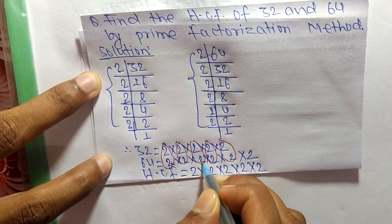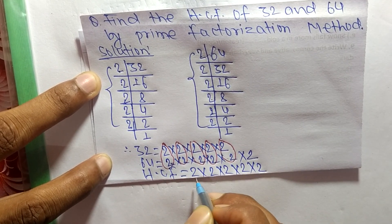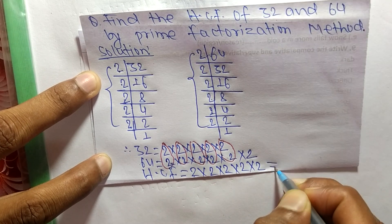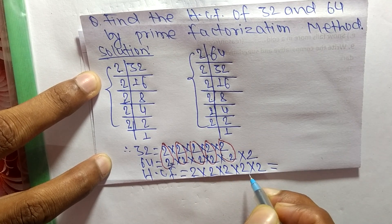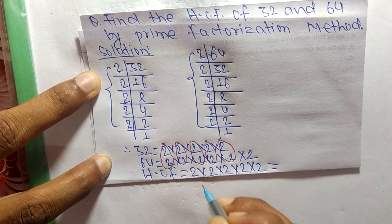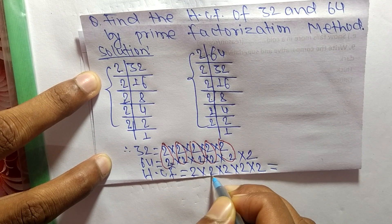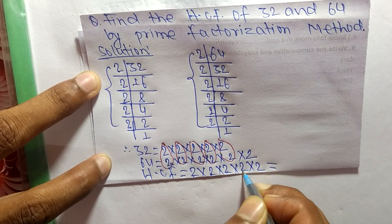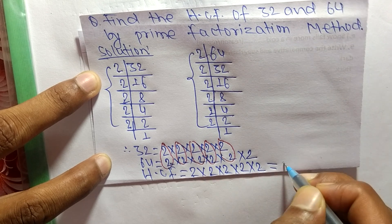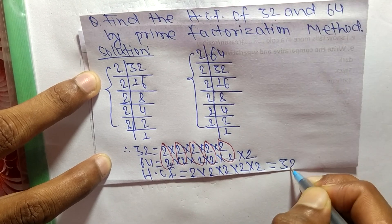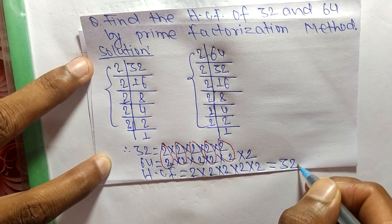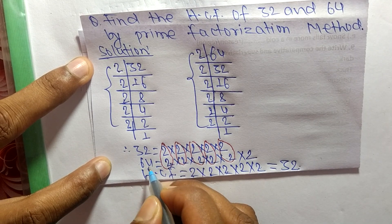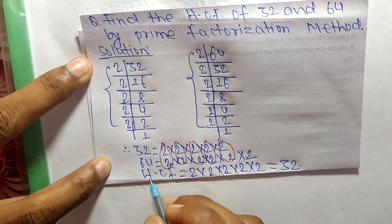There are 5 common factors of 2. The product of all these prime factors is: 2 times 2 = 4, 4 times 2 = 8, 8 times 2 = 16, and 16 times 2 = 32. So 32 is the HCF of 32 and 64.